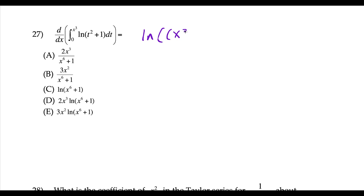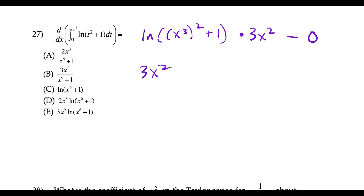Question 27 uses FTC part 2 with chain rule. We replace t with x to the third: natural log of (x to the third squared plus 1), then multiply by the derivative of x to the third, which is 3x squared. Simplifying: 3x squared times natural log of (x to the sixth plus 1) — choice E.